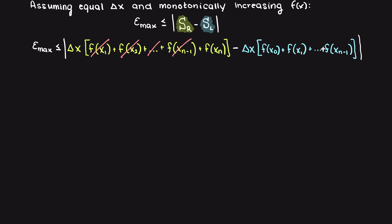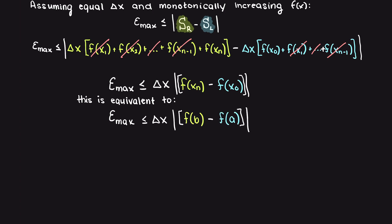As you can see, since we share common step size, all these terms here in the two Riemann sums are actually equivalent and they cancel each other out. This leaves us with our step size times the function evaluated at our endpoint minus our function evaluated at our initial point, and just to reiterate this is the maximum error we can incur using Riemann sums.